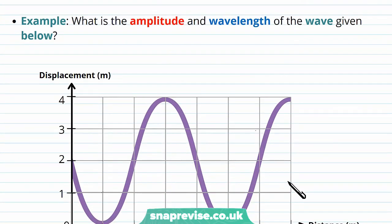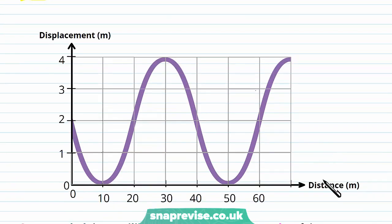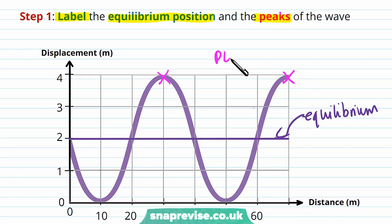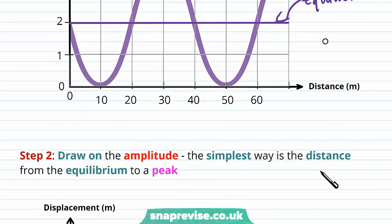Let's try an example: what is the amplitude and wavelength of the wave given? Our first step is to label the equilibrium position and the peaks of the wave. The purple line shows the equilibrium position, and the peaks are the points of maximum displacement. We mark on the peaks because they help us find both amplitude and wavelength — the peak gives the maximum displacement from equilibrium, and the distance between two adjacent peaks gives the wavelength.